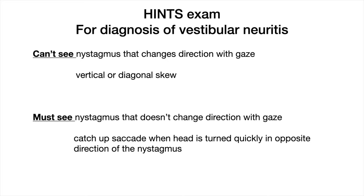There are two things that you can't see and two things that you must see in order to definitively diagnose your patient with a peripheral cause of vertigo, which is almost always vestibular neuritis. Only use HINTS if they have constant dizziness and nystagmus at rest.